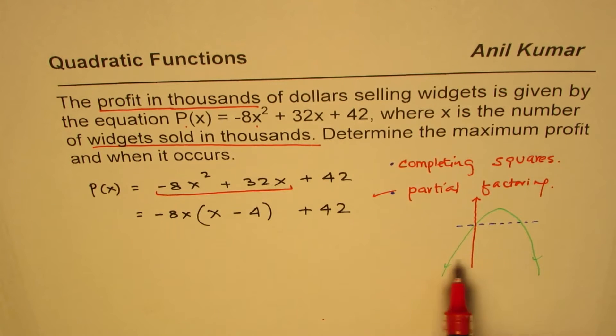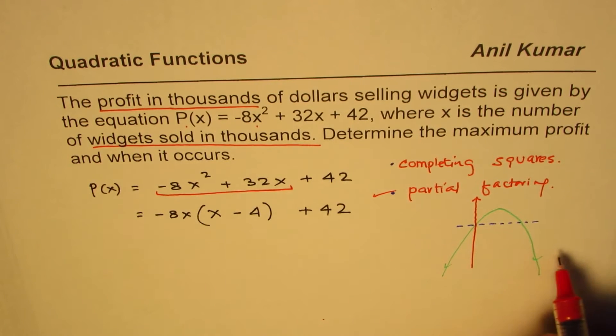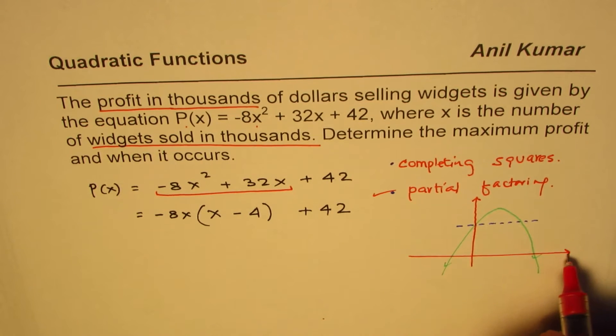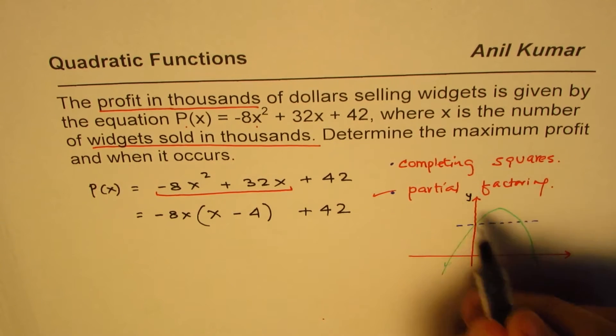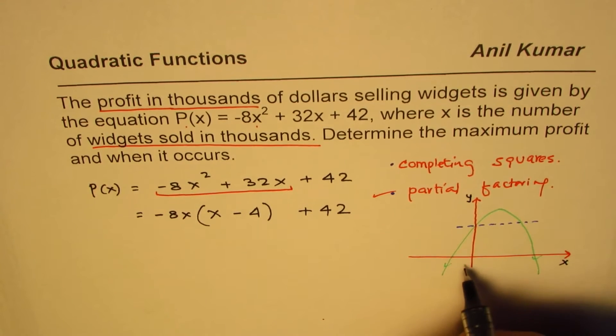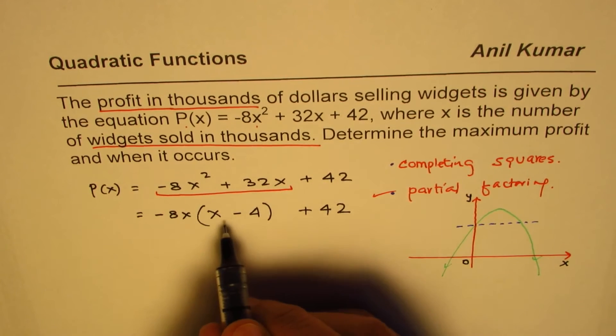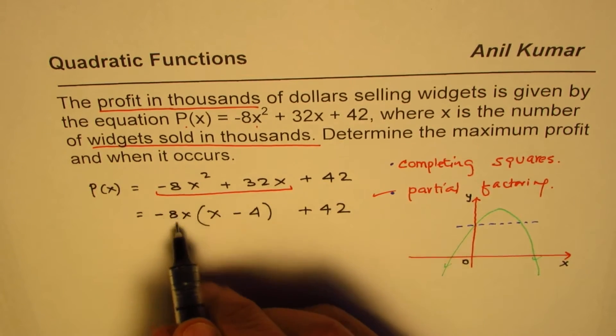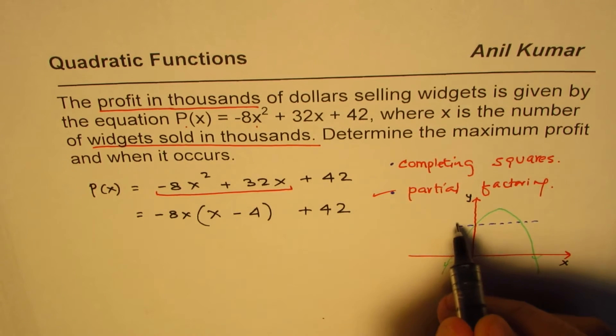I'm not drawing the x-axis, I'm just saying that if I draw a horizontal line, and let me now sketch. Because at x equals to 0 we have a value of 42, so I can sketch this y-axis. So this is my y-axis, this is x-axis.